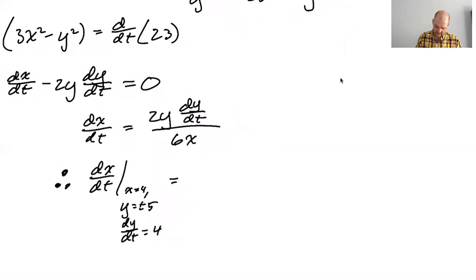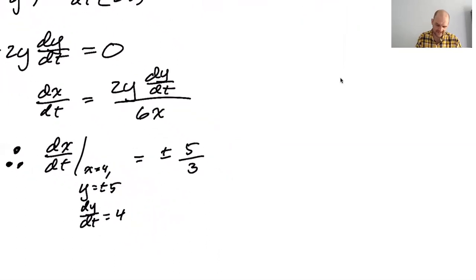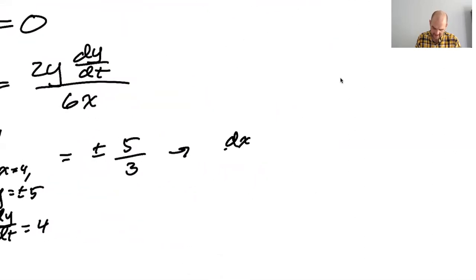So y dy dt over 3x if you want. And then we know that dx dt when x is 4, y is plus or minus 5, and then dy dt is 4 is going to be, I don't know, plus or minus 10, plus or minus, oh, the 4 and the 4 just canceled. So I'm going to get plus or minus 5 thirds. So what happened there was dy dt is 4, x is 4. So those really just cancel.